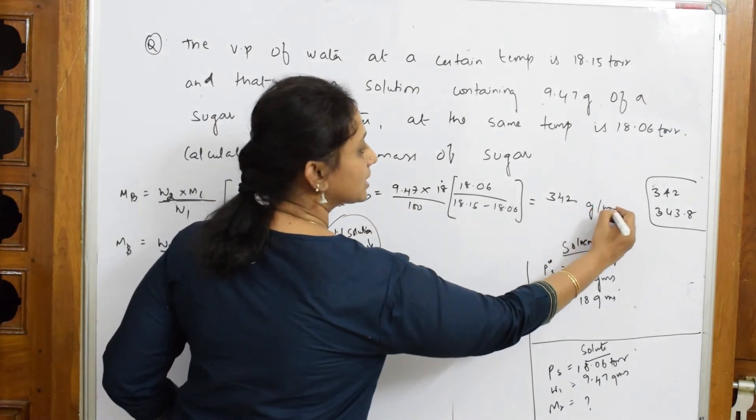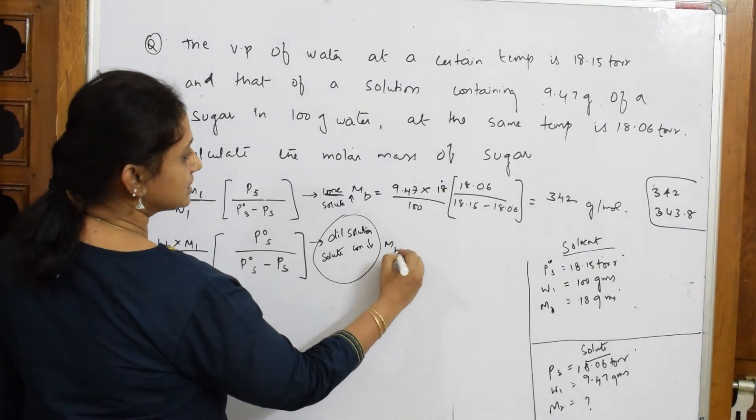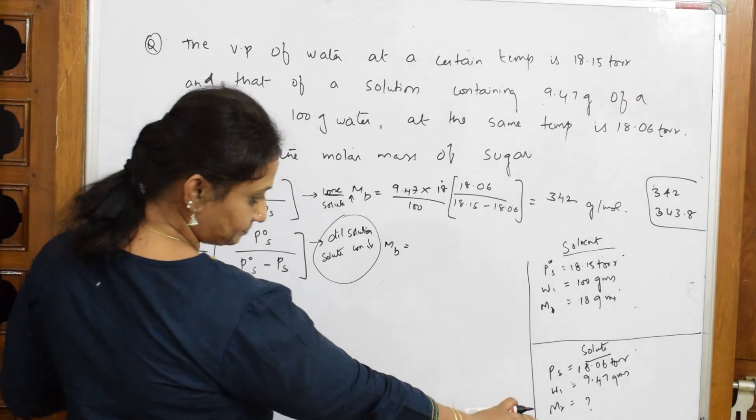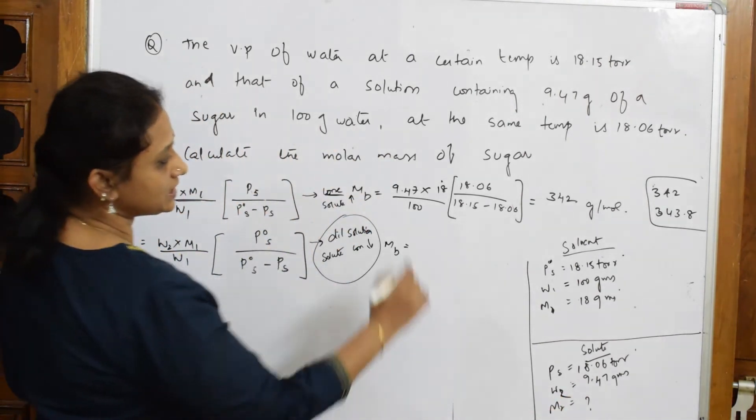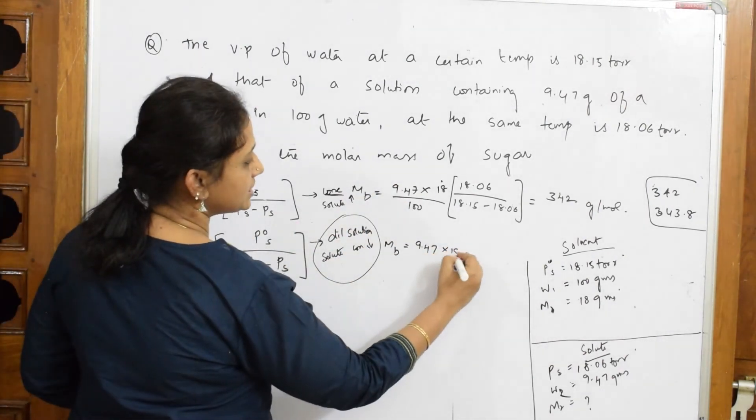Let's substitute in the second one. Mᵦ equals—what should I take? Your w₂ given to me is again 9.47. Both are same, isn't it? Copy the same: 9.47 into 18 divided by 100 into